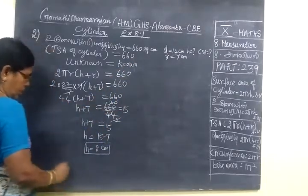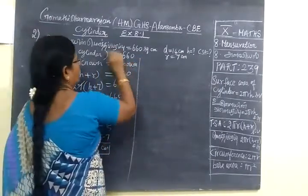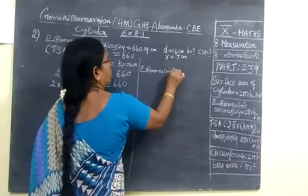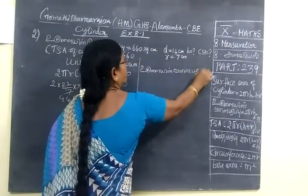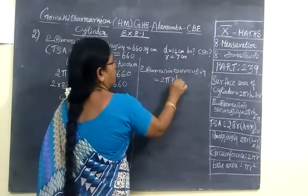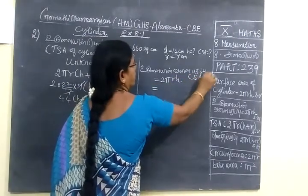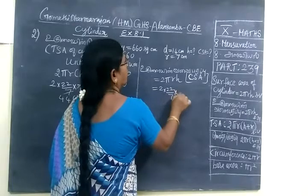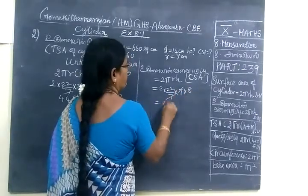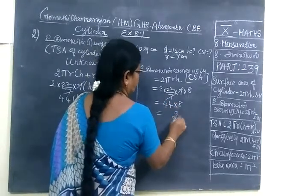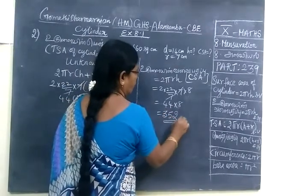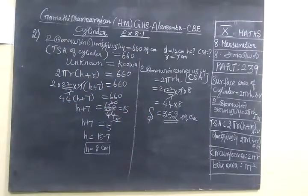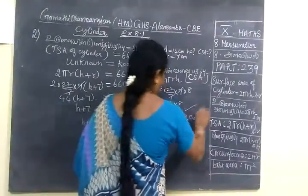Now you have to find CSA of cylinder. Every time I don't write cylinder, the problem is about cylinder. That means the curved surface area. You are finding CSA of cylinder. So 2 into 22 by 7 into 7, h is 8. So 7, 7 cancel. So 44 into 8. So 352 square centimeter. Area is always square. So this is the answer for the second one. This one is correct. Second.